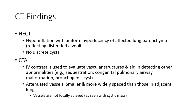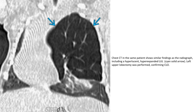CT findings: On non-contrast-enhanced CT, there is hyperinflation with uniform hyperlucency of the affected lung parenchyma and no discrete cysts. On contrast-enhanced CT, IV contrast is used to evaluate vascular structures and to detect other abnormalities like sequestration, congenital pulmonary airway malformation, and bronchogenic cysts. Attenuated vessels are smaller and more widely spaced than those in the adjacent lung. Chest CT shows similar findings as radiograph, with hyperlucency in the left upper lobe; left upper lobectomy was performed, confirming CLO.